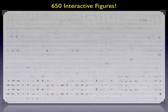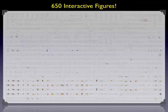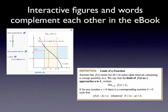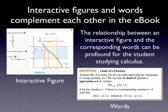There are 650 interactive figures in the e-books, starting in the pre-calculus review sections and going all the way through the vector calculus. A unique feature of our e-book is that the interactive figures and the words coexist together in the e-book, right next to each other.